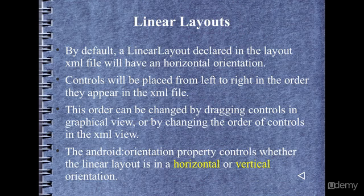Let's talk about linear layouts. By default, when we create a linear layout with no orientation specified, it will have a horizontal orientation — controls will be placed horizontally next to one another, in the left-to-right order they appear in the XML file. We can drag controls in the graphical view to change the order, or change the order directly in the XML view.